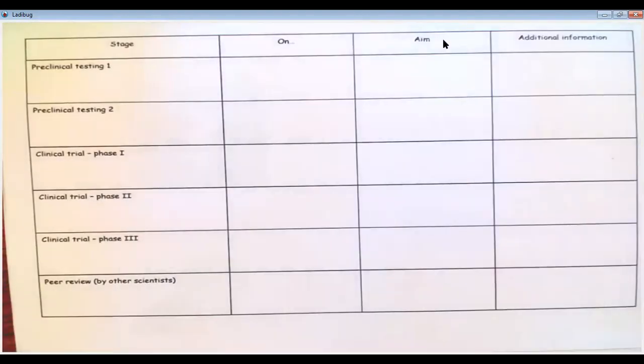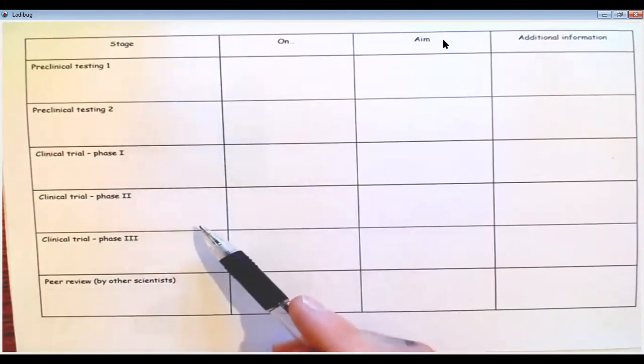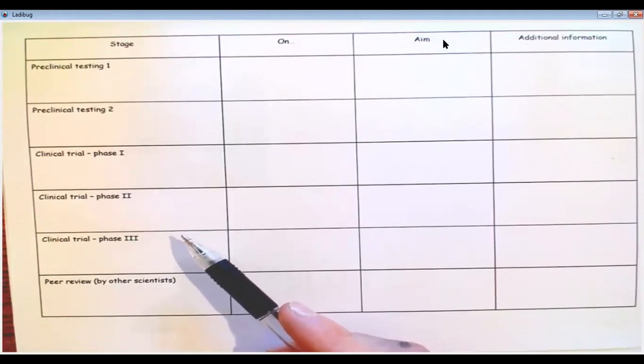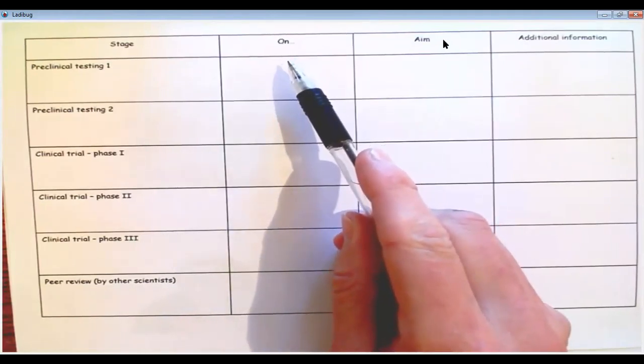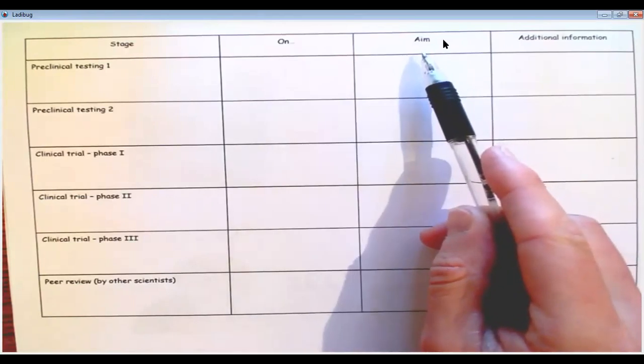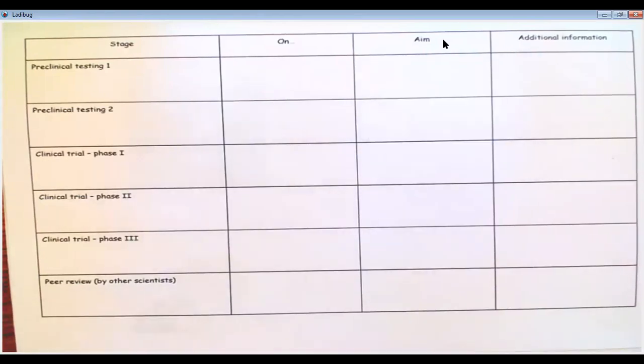We now move to our second document, which looks like this. And what we're doing here is we're breaking down the process of drug discovery or drug testing into these six different stages. So I've got six different stages down here, and you can see what they're called on the left-hand side. Now, across the top, we have three columns. One says on, what is it tested on? What is the aim of this stage? And the last box says additional information. So additional information that we need to know.